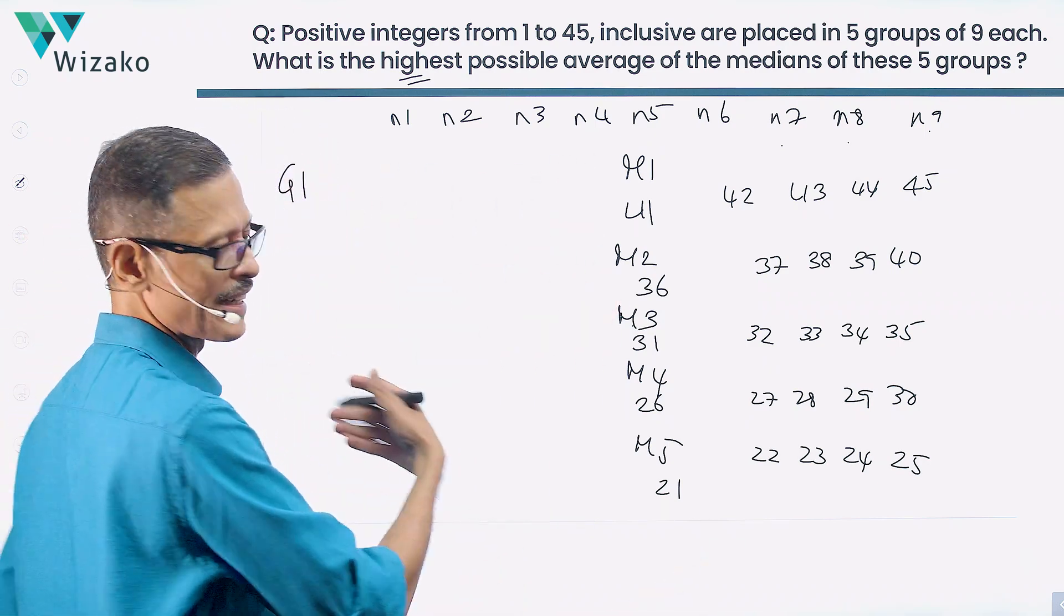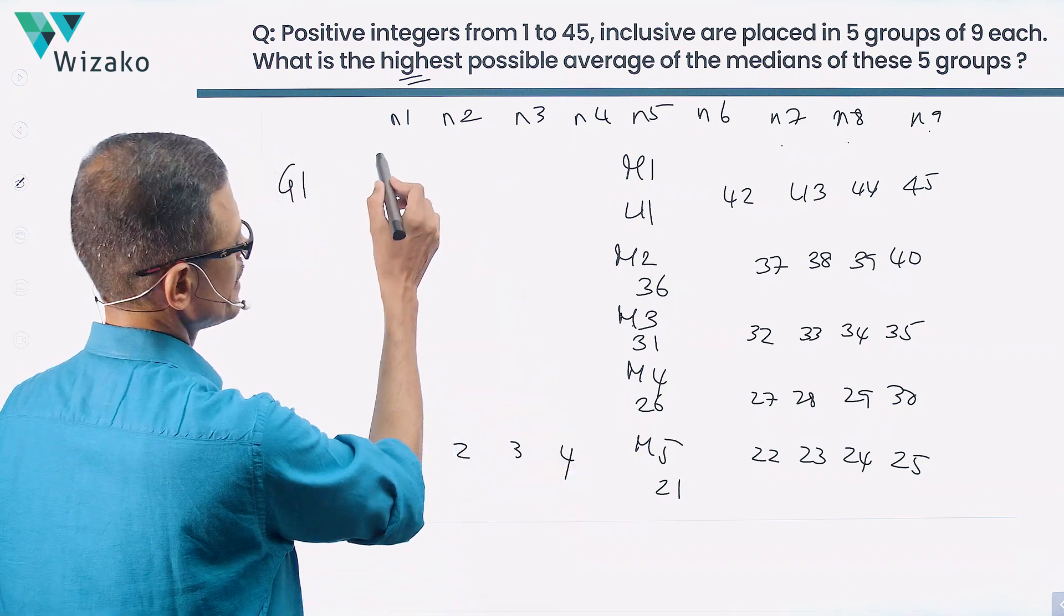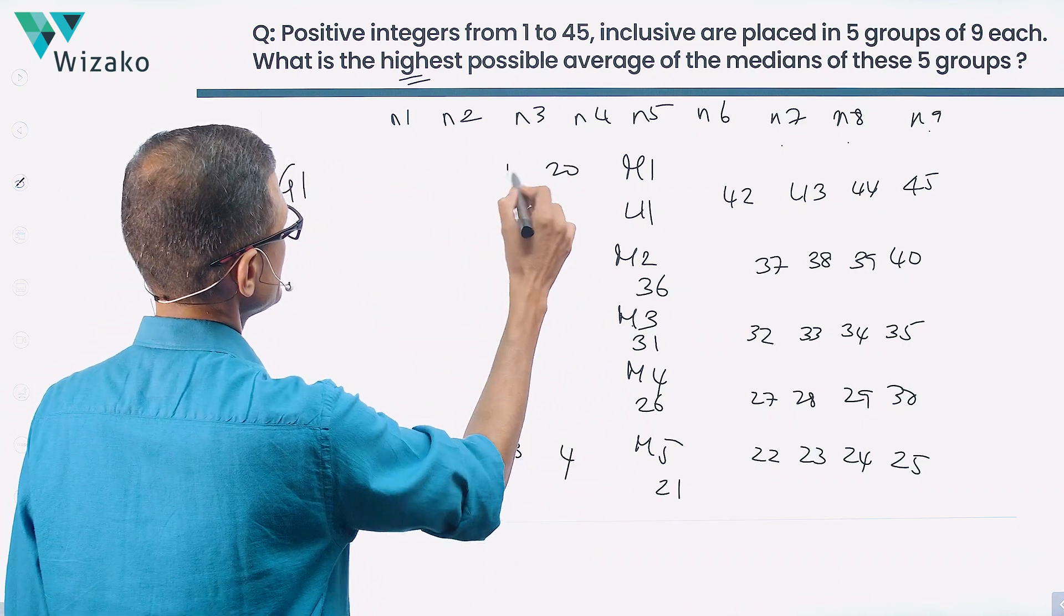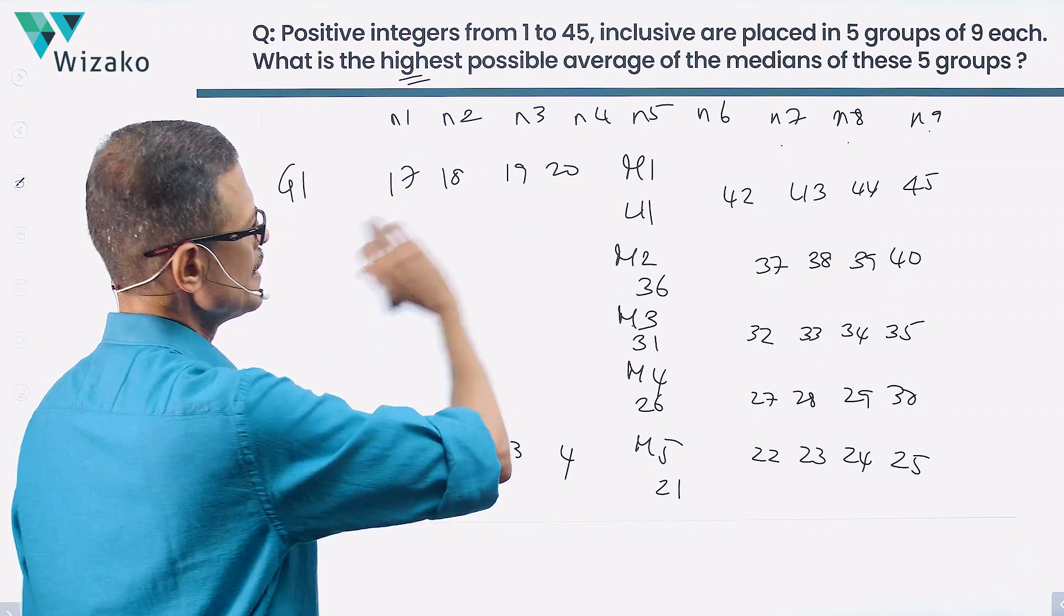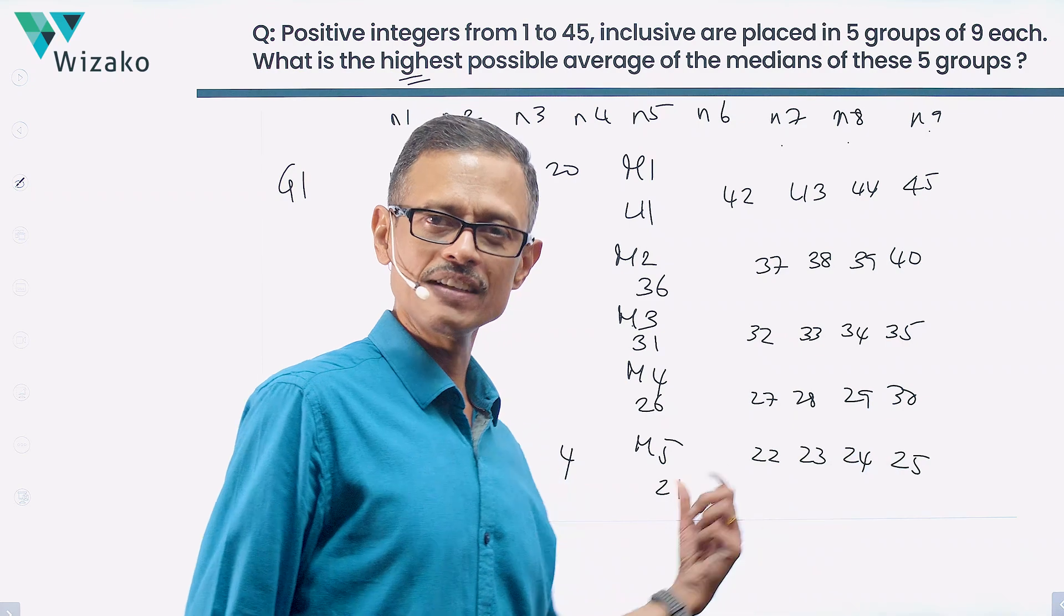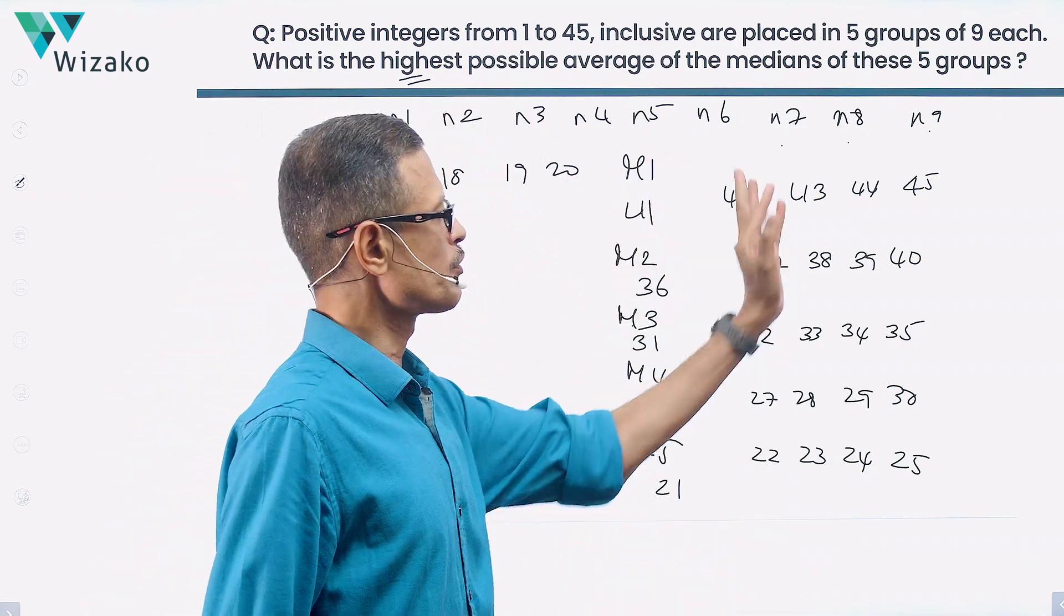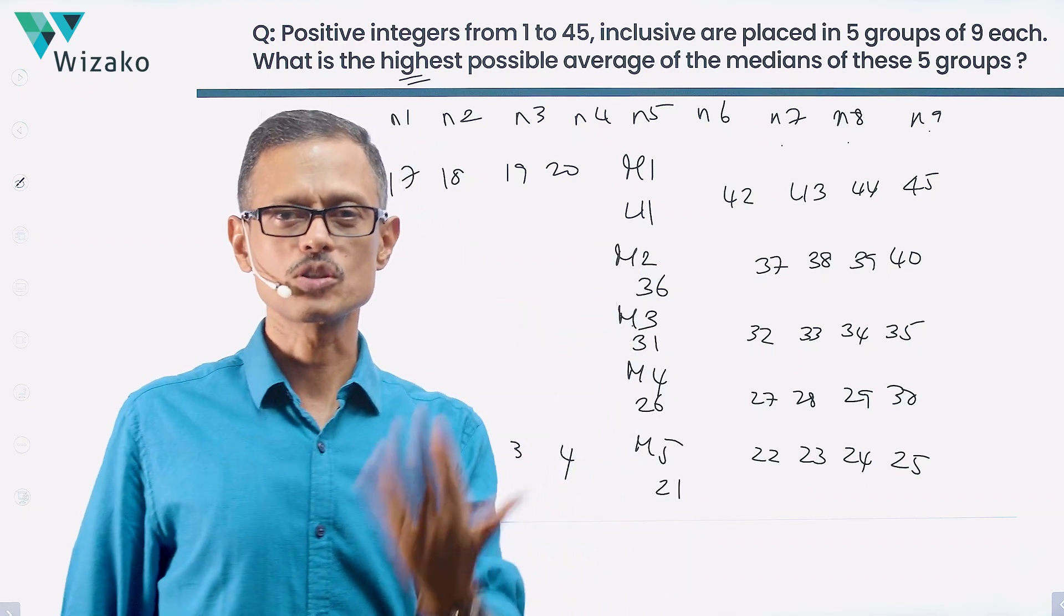You can place 1, 2, 3, 4, 5, 6, 7, 8, or you can basically keep 1, 2, 3, 4 here, and you can keep essentially, we have up to 20, 20, 19, 18, 17 here. The medians will not change. 1, 2, 3, 4, 21, 22, 23, 24, 25. Median is 21. 17, 18, 19, 20, 41, 42, 43, 44, 45. 41 happens to be the median.